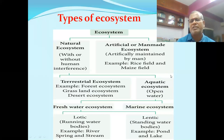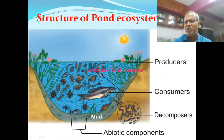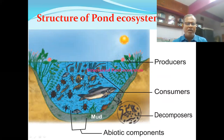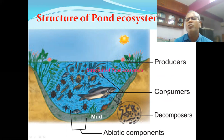Pond and lake are examples of lentic ecosystem; rivers, rivulets, springs, and streams are examples of lotic ecosystem. A pond acts as an ecosystem because it is the structural and functional unit of ecology. The interaction between biotic and abiotic components of a pond forms an ecosystem.